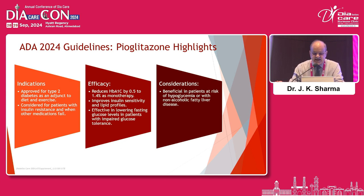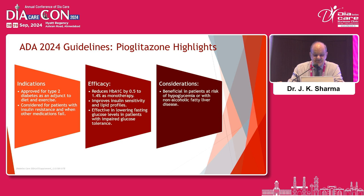ADA 2024 guidelines pioglitazone highlights: approved for type 2 diabetes as an adjunct to diet and exercise, and considered for patients with insulin resistance and when other medications fail. But why wait for other medications to fail? Why not start it when there is significant resistance? Start it as first line. It reduces HbA1c by 0.5 to 1.4% as monotherapy, improves insulin sensitivity and lipid profile, is effective in lowering fasting glucose in patients with impaired glucose tolerance, and is beneficial in patients at risk of hypoglycemia or with non-alcoholic fatty liver disease.